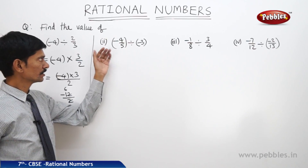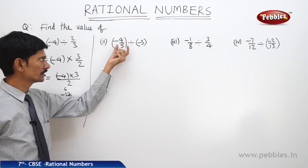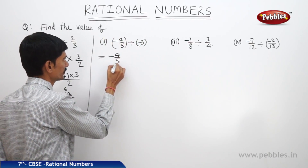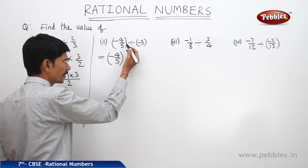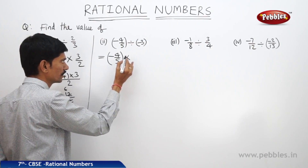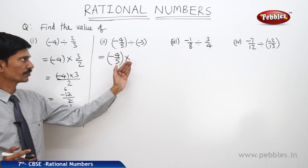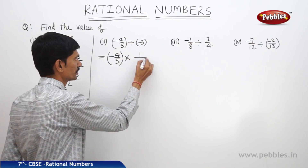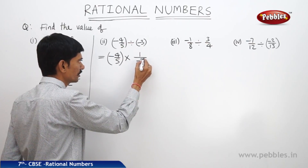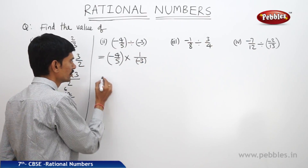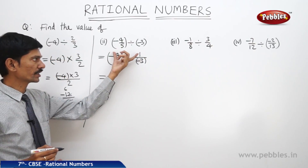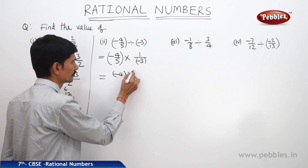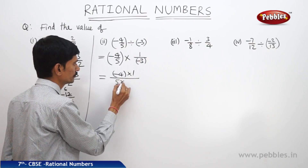In the second question, the rational number minus 4 by 5 is divided by another rational number minus 3. This equals minus 4 by 5 — the first rational number stays the same. We write the division symbol as multiplication, then write the reciprocal of minus 3, which is 1 by minus 3. So this becomes the multiplication of two rational numbers, and we multiply both numerators and denominators to get minus 4 into 1 divided by 5 into minus 3.